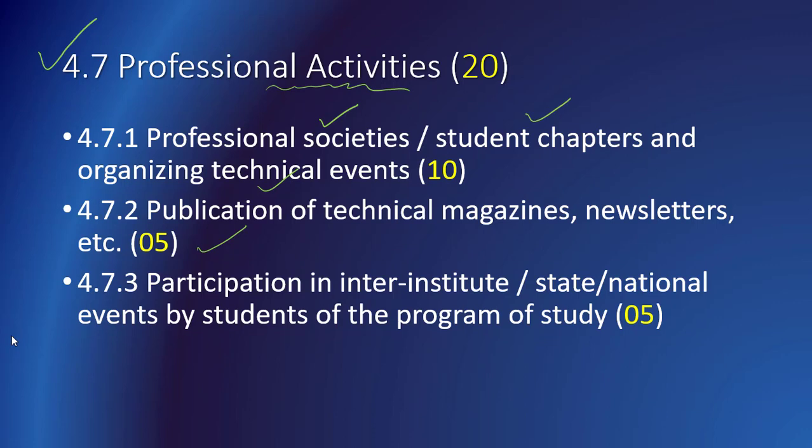Professional societies and chapters with relevant activities include the Institution of Engineers, Computer Society of India, Institution of Mechanical Engineers, Indian Society for Technical Education, Indian Institute of Industrial Engineering, and Institution of Civil Engineers. These are some of the national level professional societies for which student chapters may exist. This is not a complete list — just examples of the available professional societies.